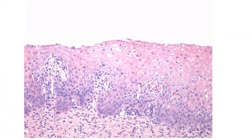Here is another picture of low-grade cells, properly oriented. We can see some loss of polarization and some atypical cells, but they are only in the lower one-third of the epithelium.